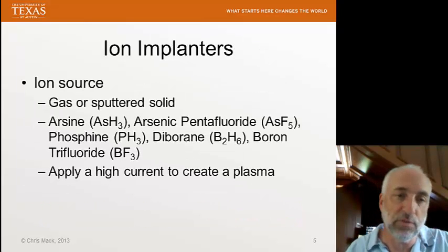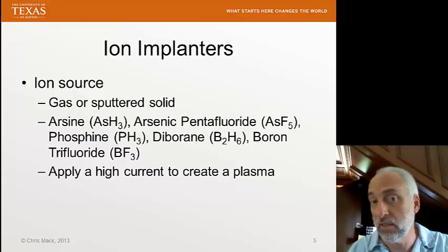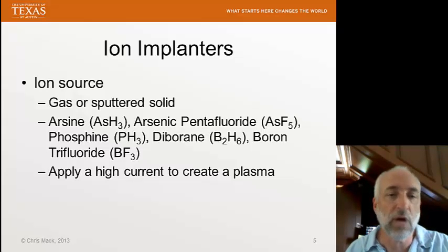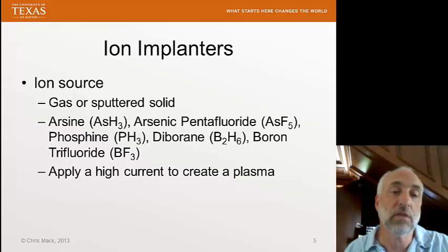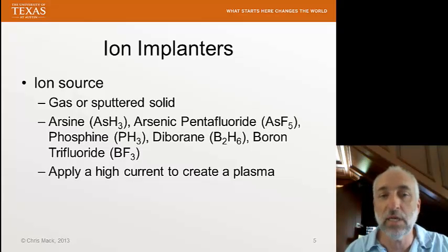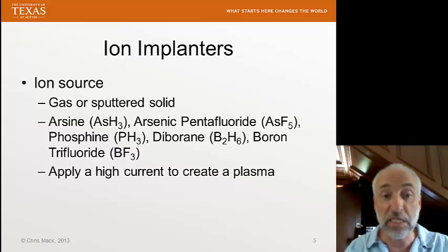Let's look at the ion implanters and their basic components. First, the source of ions: we can use a gas or sputter off a solid to create a vapor of the material we're interested in. There are lots of choices — arsine or arsenic pentafluoride to deliver arsenic, phosphine is very commonly used, diborane or boron trifluoride to deliver boron. Note that many of these gases are extremely toxic. Arsenic is not something you want to ingest. Phosphine is very dangerous — if brought into contact with air it will spontaneously combust. So there are a lot of safety features in the piping of these gases into the ion implanter.